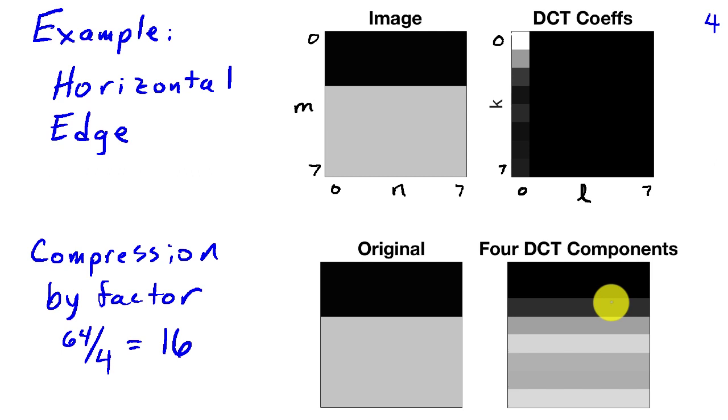And if we approximate the image using only four DCT coefficients, we see that we do a pretty good job of reconstructing the edge. And since we're using four DCT coefficients as opposed to the 64 that were originally present, we've achieved compression by a factor of 16 or 64 over 4.